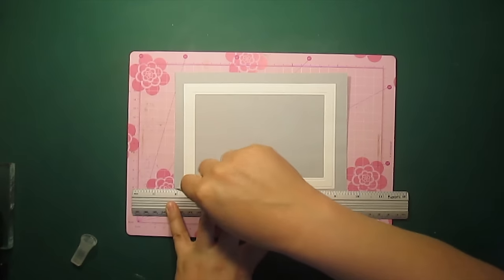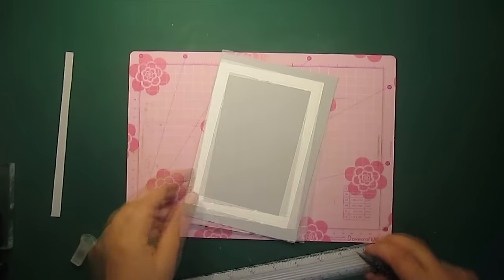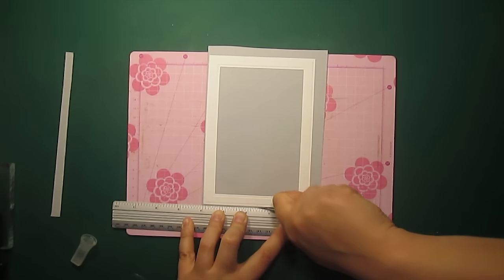Now I'm trimming the gray cardstock to create a thin border about 1/16th of an inch or less. I'll do it both on the outer and inner edges.